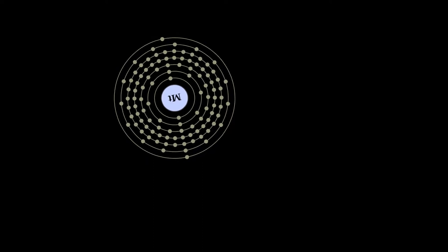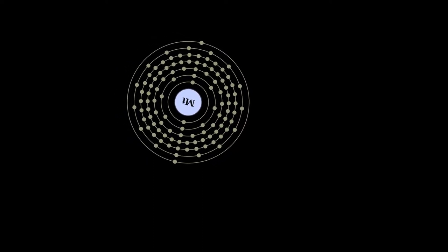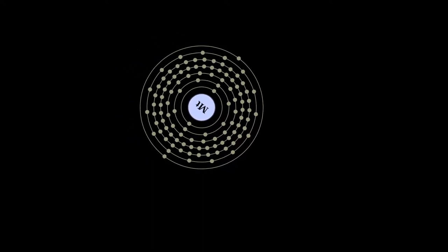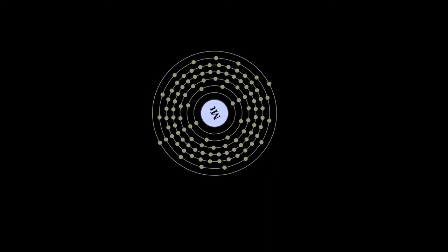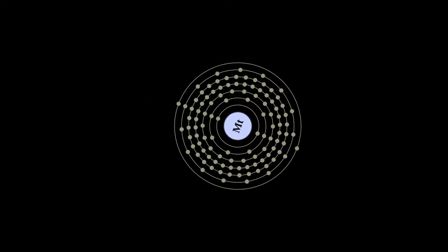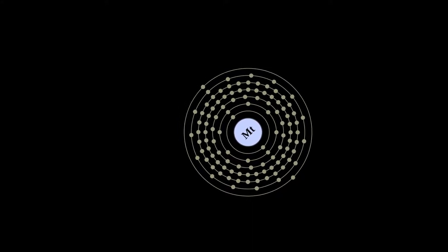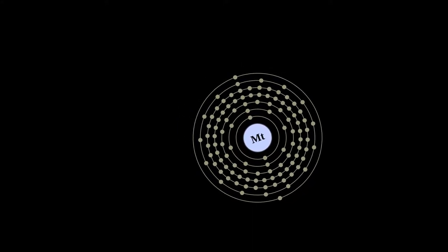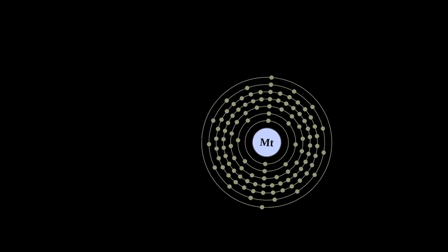In the periodic table, Meitnerium is a d-block transactinide element. It is a member of the 7th period and is placed in the group 9 elements, although no chemical experiments have yet been carried out to confirm that it behaves as the heavier homologue to iridium in group 9 as the 7th member of the 6d series of transition metals.